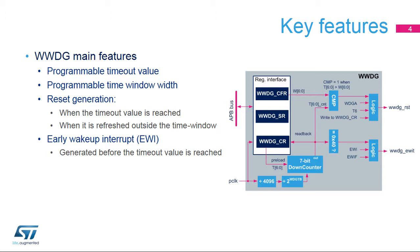As shown in the figure, the Window Watchdog uses the APB clock, or PCLK, as reference clock for its time base. The PCLK is provided by the RCC block. This clock is divided by 4096 and by a value programmed by the application. The application can also program the reload value of the down-counter bits T[6:0]. The window width is controlled by bits W[6:0].